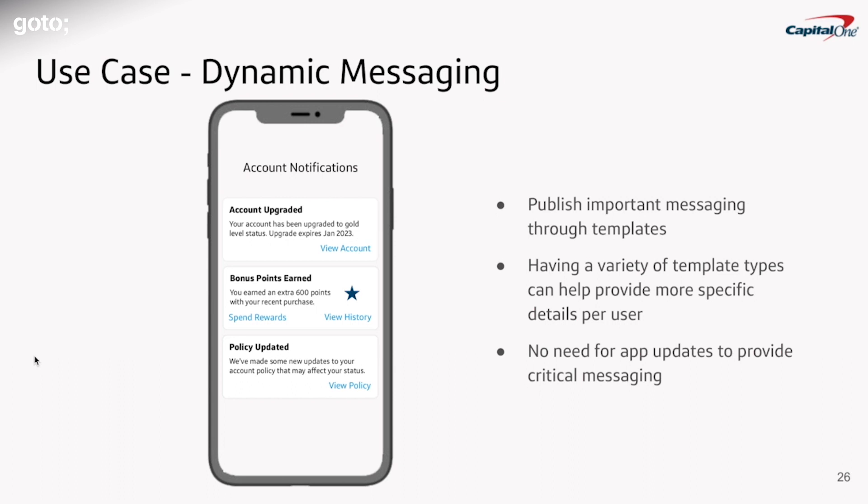Another really good use case is dynamic messaging. Let's say your app has a notification center where you want to tell the customer about important updates to their account or alert them to new things. Having a variety of templates can help you provide better details or more specific items to the customer. Since this is all server-driven, we can send updates to the UI as soon as they come. If there's something urgent with their account, instead of waiting for a UI or app update we can push that to the customer immediately.